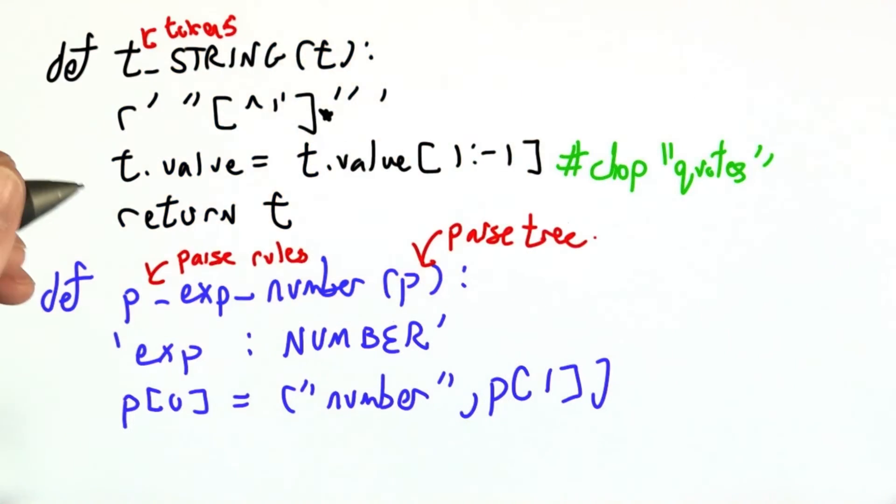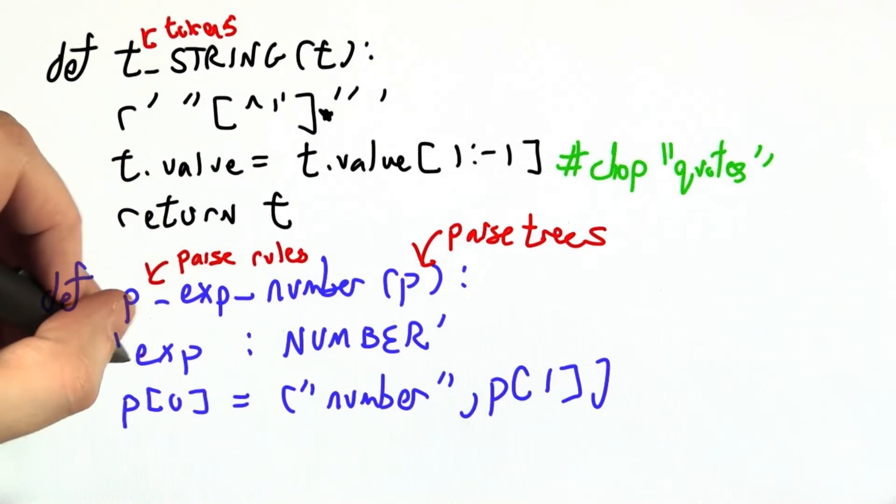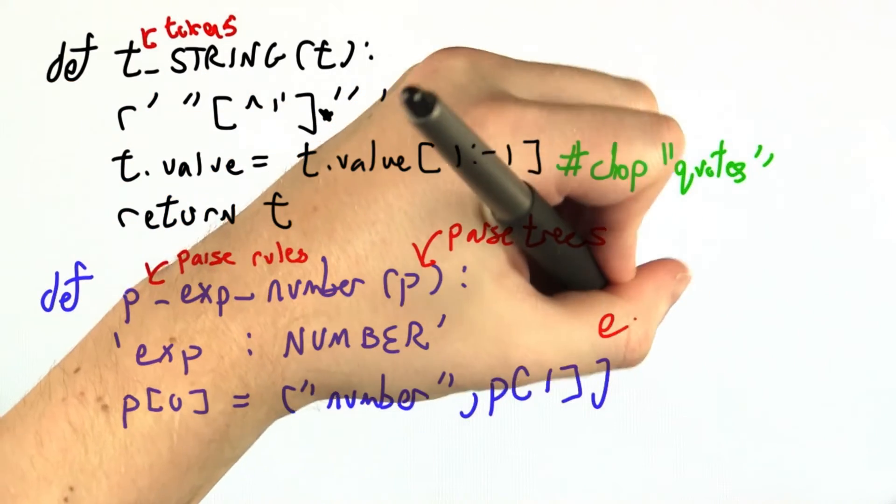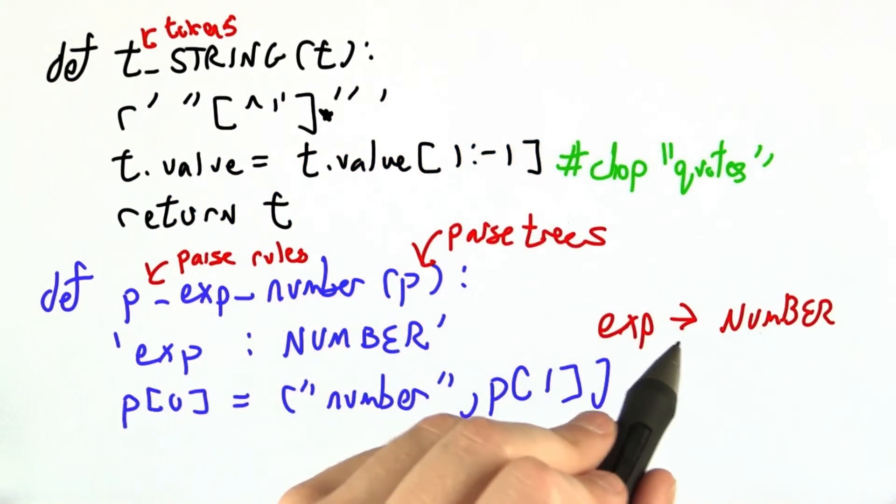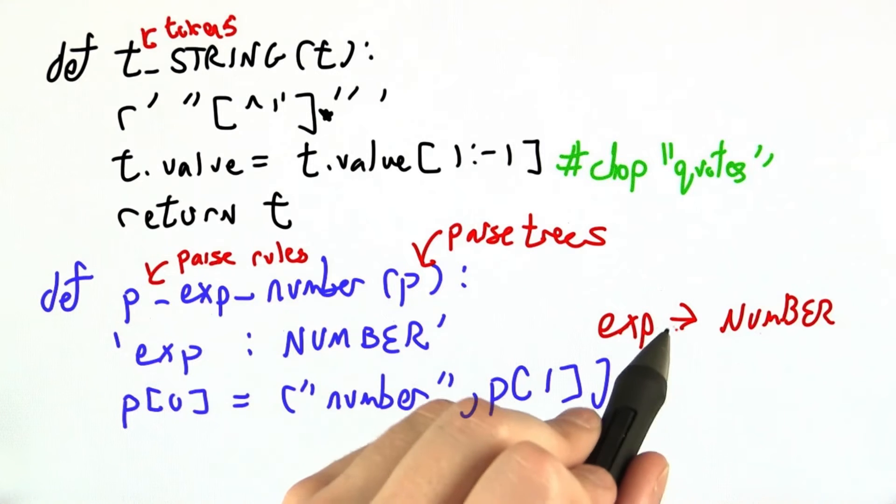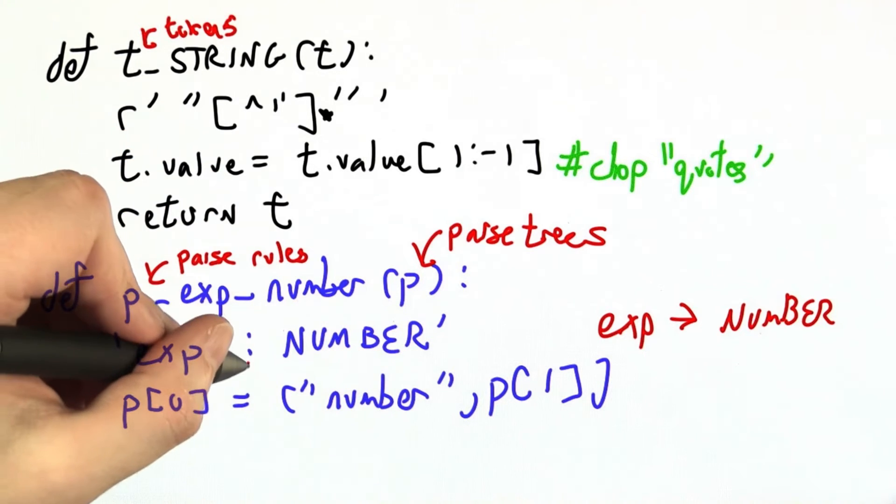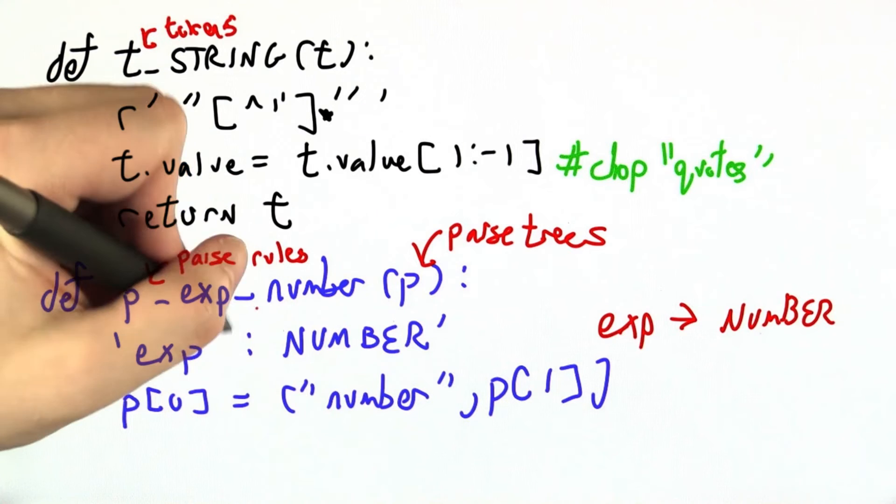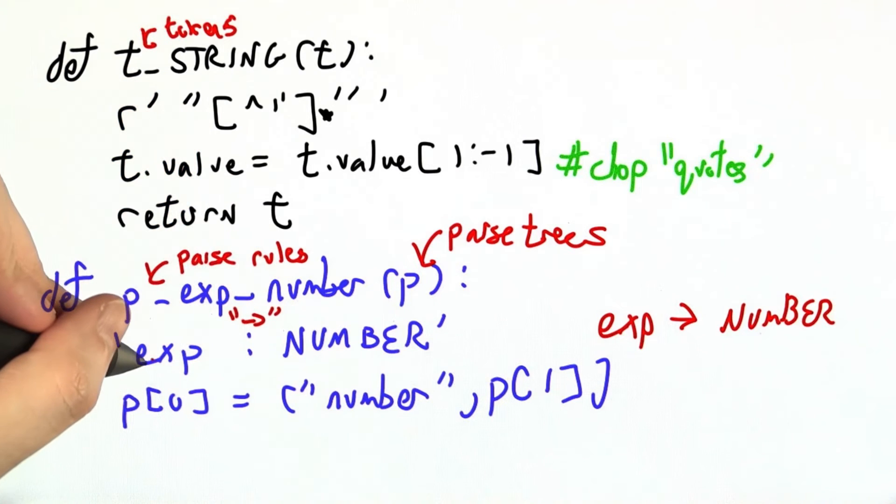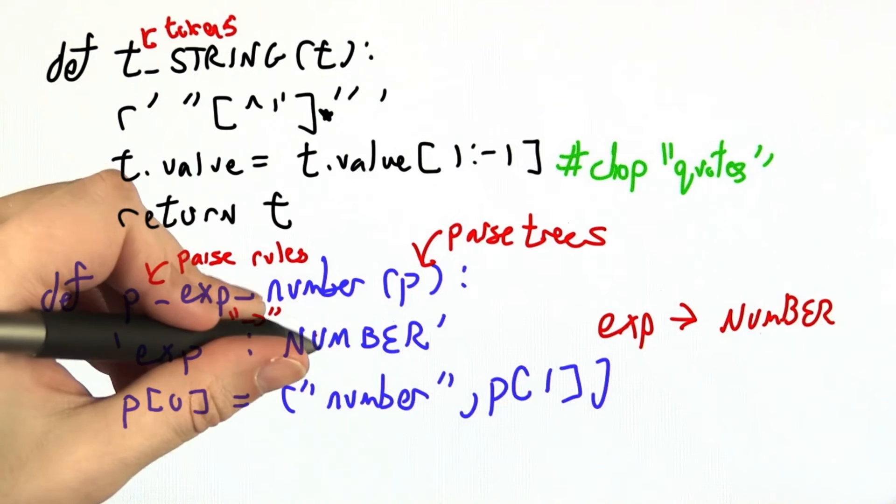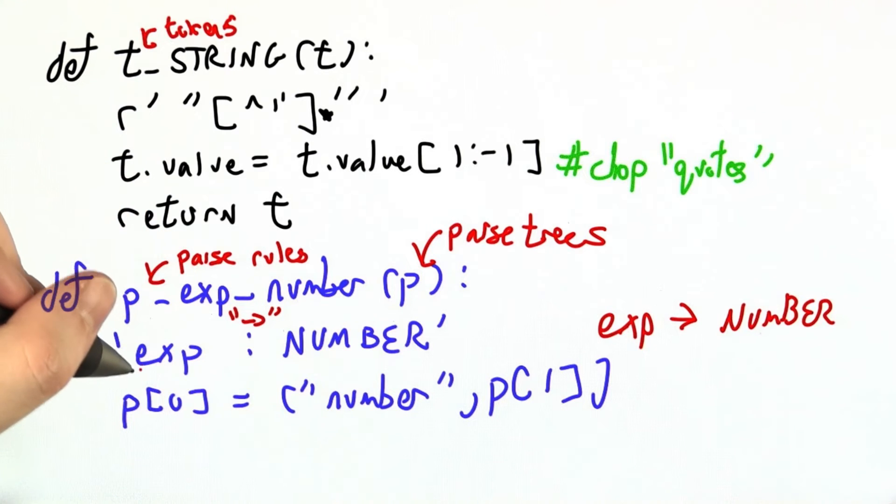And just as our token rules were in some sense under the hood functions of this object T, our parsing rules are under the hood functions of this object P. And this is the parse tree, or more accurately, a number of parse trees. Here's our rule written out, and this is very similar to exp arrow number, except that there's no great way to write the arrow, so instead we'll just write a colon by convention. But you should view this as the arrow. So this is expression can be rewritten as number, and we just put it in quotes like a string.